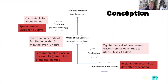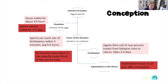After fertilization, we have a single-celled human being called a zygote. That zygote quickly starts to undergo cell division and begins to travel from the fallopian tube to the uterus. That process takes about three to four days, and implantation occurs six to ten days after conception in the uterus.